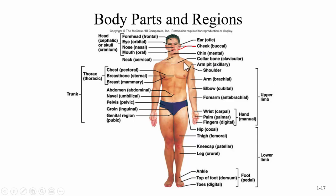The collarbone area is clavicular. The armpit is axillary. The arm is brachial. The elbow is cubital — the front of the elbow is the antecubital fossa. The forearm is antebrachial. The hand is manual. The wrist is carpal. The palm is palmar. Fingers are digital.